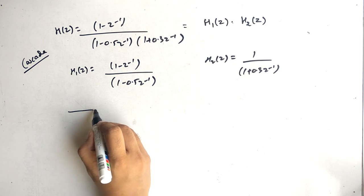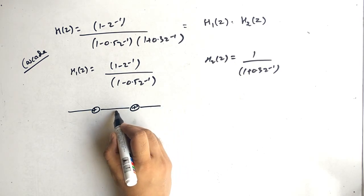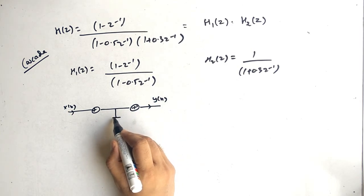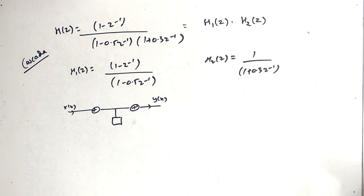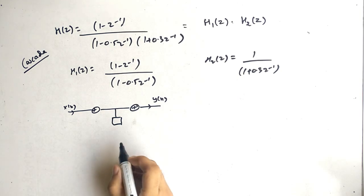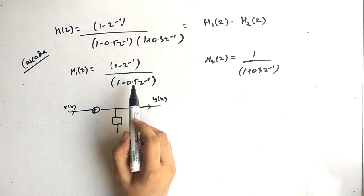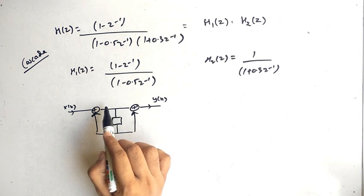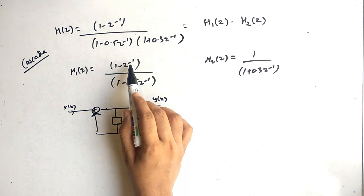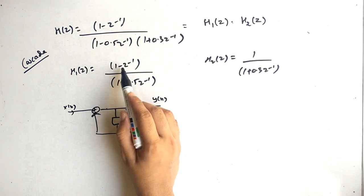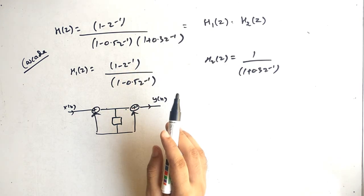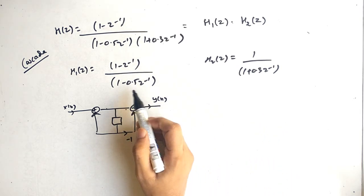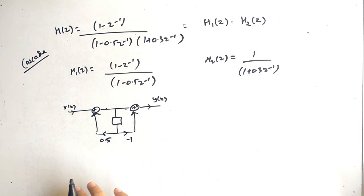For direct form 2 of H1, we have a plus sign and a delay. This is x of n, this is y of n, with a z⁻¹ delay represented by a box. The first term is 1, so 1 is present here. Then z⁻¹ with coefficient minus 1 — this represents the zeros, and for zeros the coefficient remains as-is, so here it is minus 1. For the pole, the coefficient is 0.5.